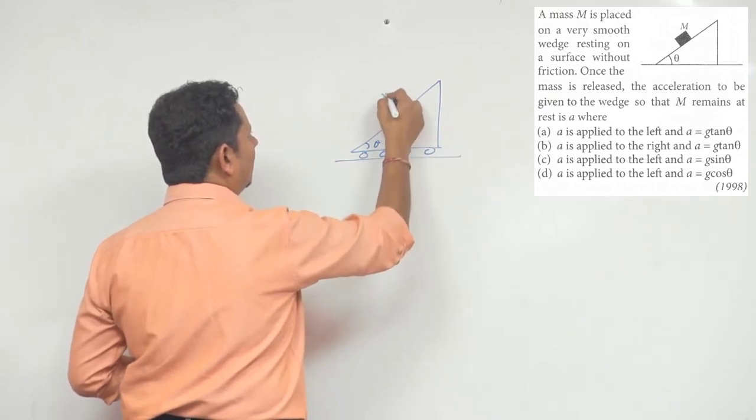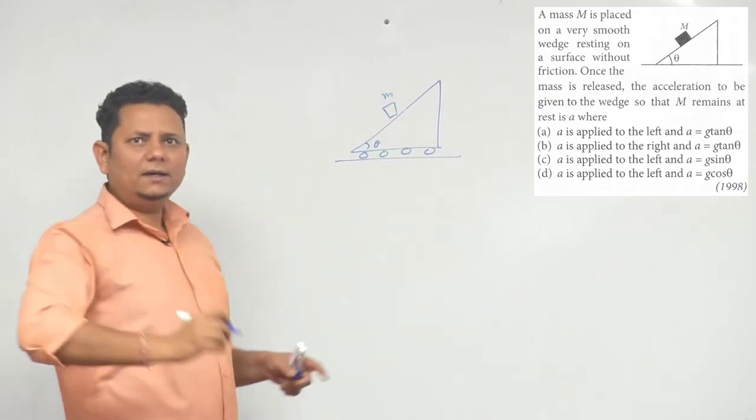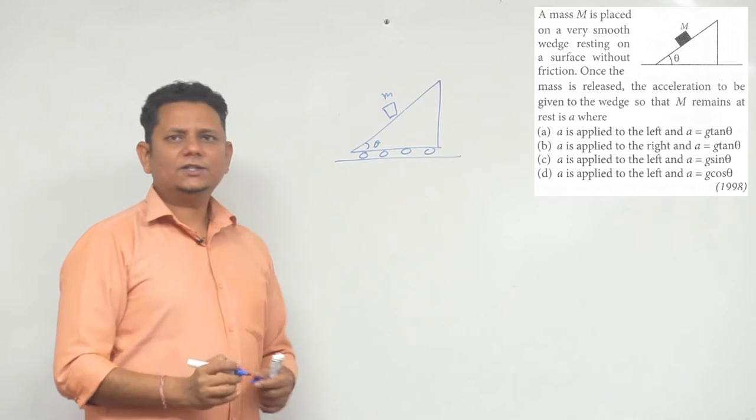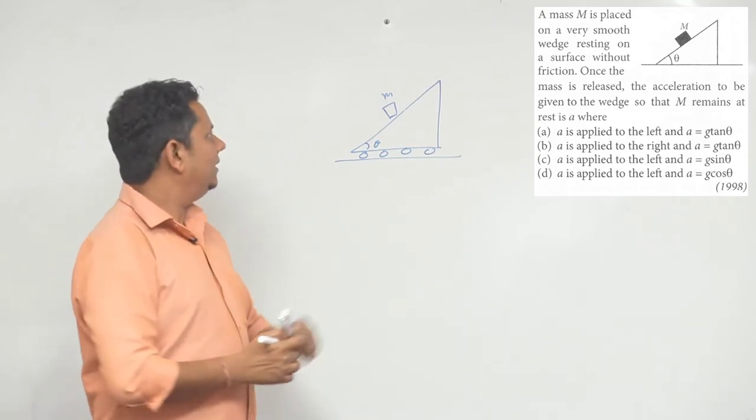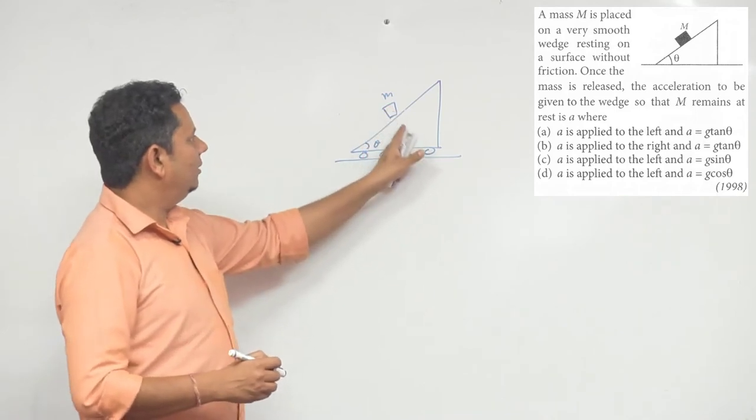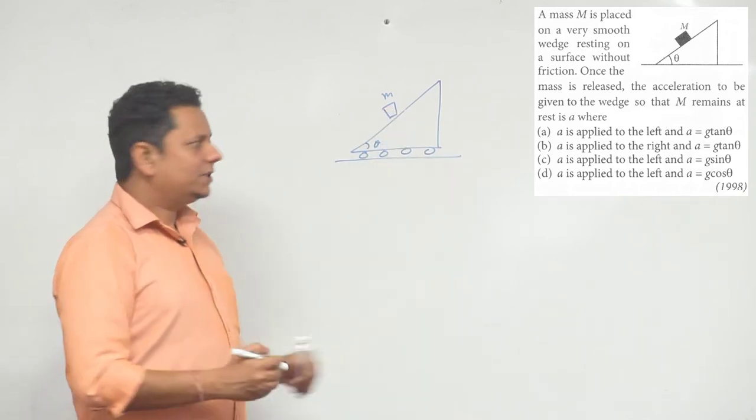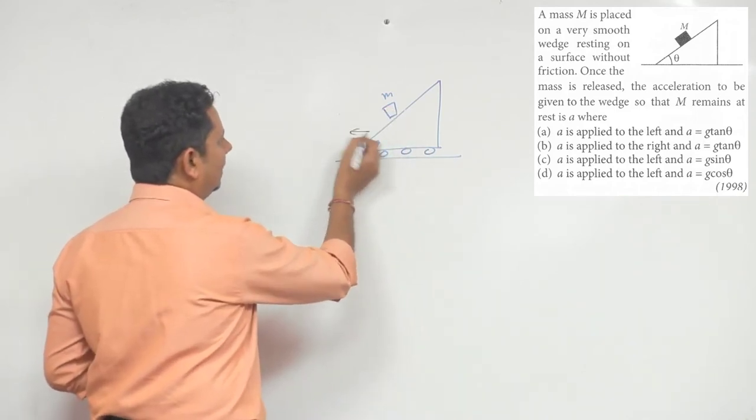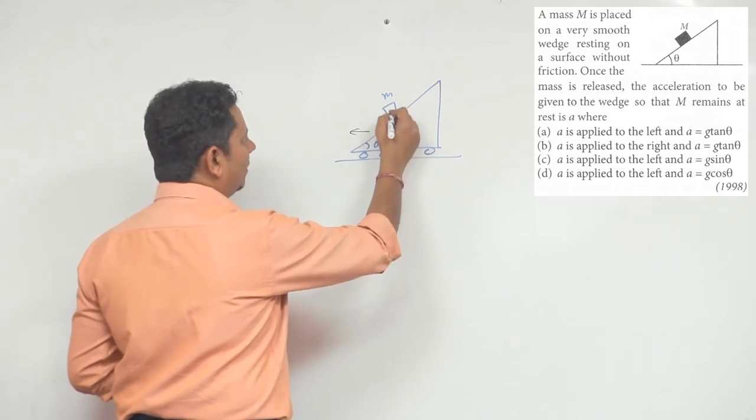When this mass m is placed, we want that in this case we give it an acceleration in such a way that the mass remains fixed with respect to it, there is no relative motion between them. For this we need to give acceleration in this direction.